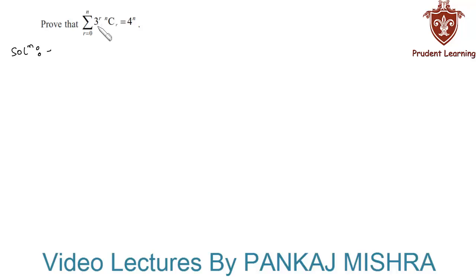Prove that summation of 3^R into NCR where R ranges from 0 to N equals to 4^N. Let us see the solution for this problem.